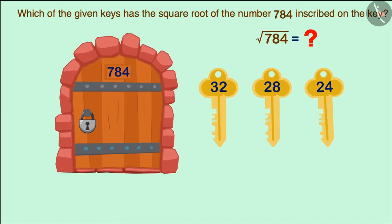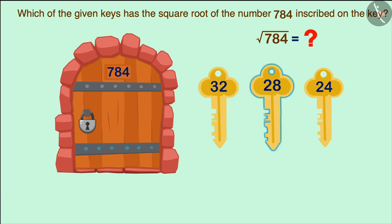Now the remaining 3 keys have even numbers. Which of the following is the square root of 784?